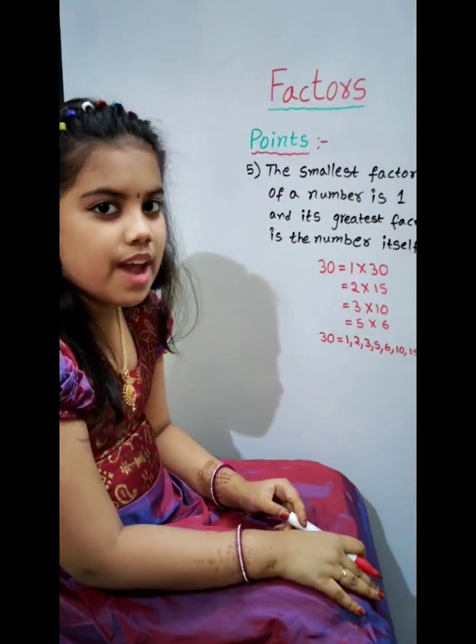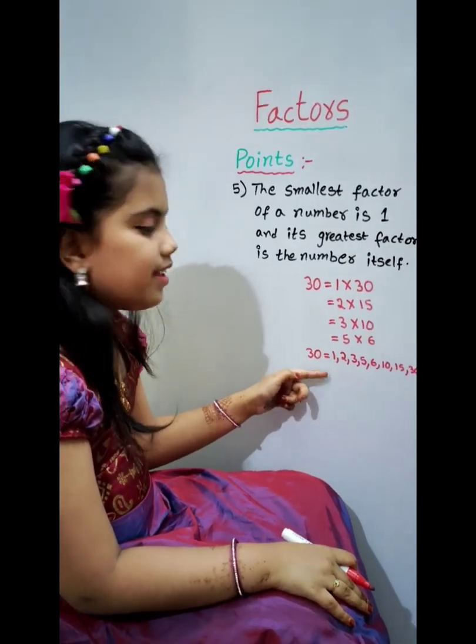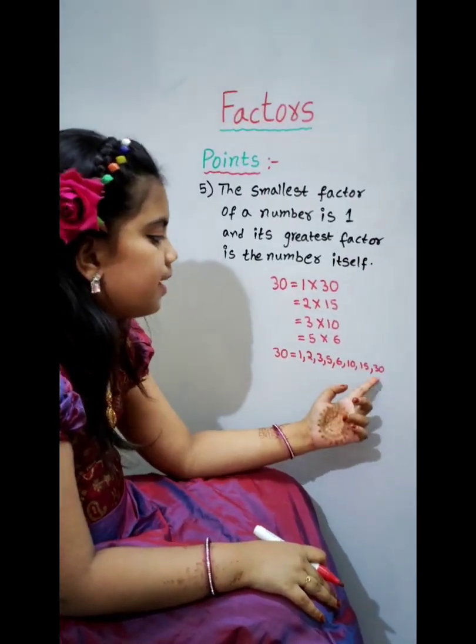The smallest factor of a number is 1 and the greatest factor of the number is the number itself. In our next video, we will learn about common factors, highest common factors, prime numbers and composite numbers. If you like this video, please like, share and subscribe.